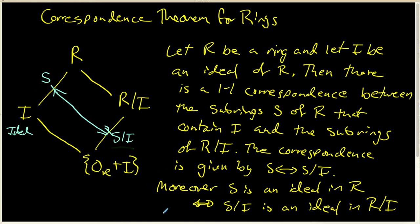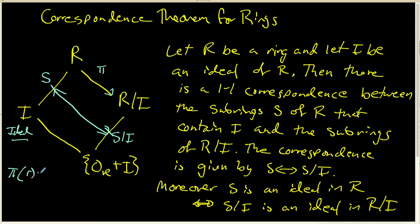If we look at this particular picture, it suggests a possible way to prove the correspondence theorem. We know that pi, the canonical map, is a ring homomorphism from R to R mod I. And we know that the kernel of that canonical map is going to be the ideal I. In other words, we let pi of r be r plus I, and under this ring homomorphism the kernel of pi turns out to be the ideal I.